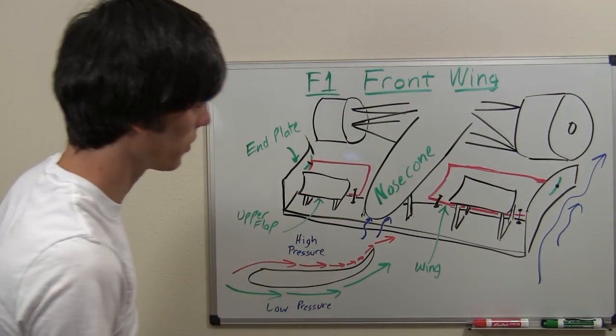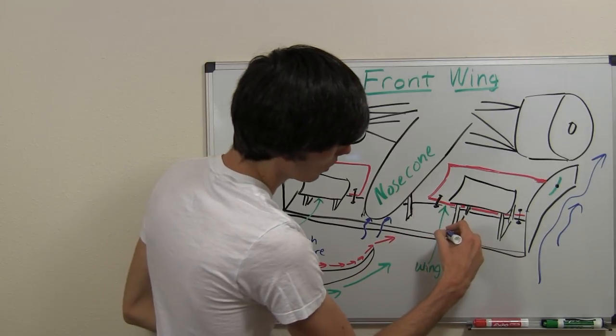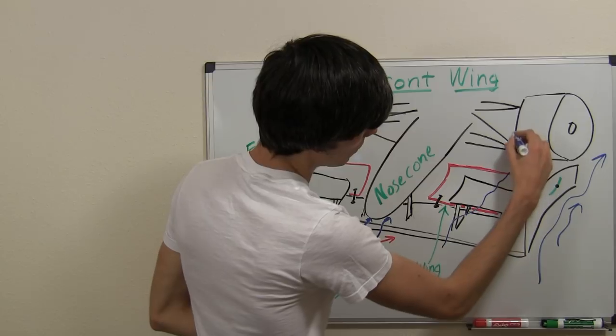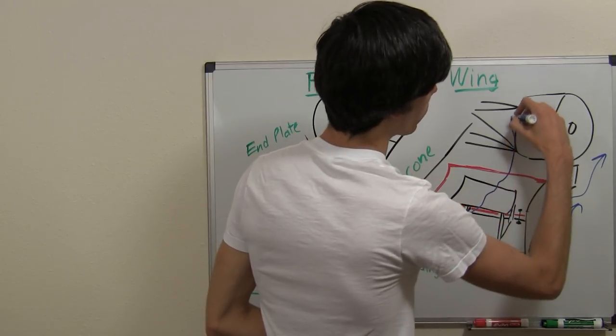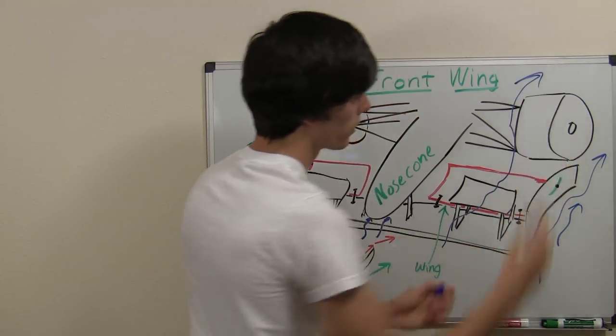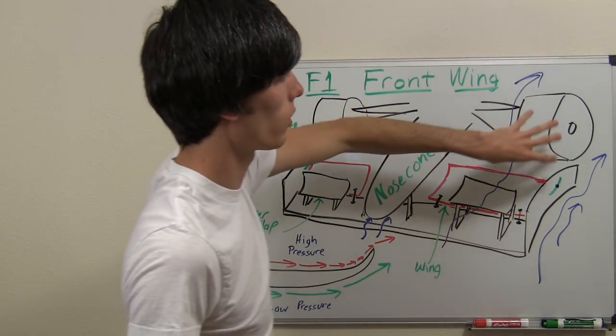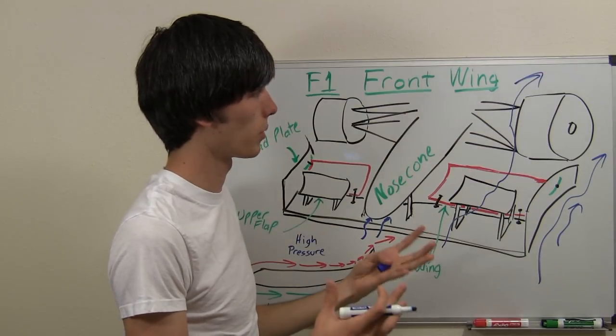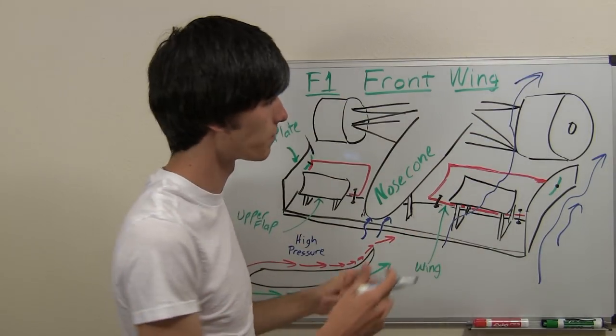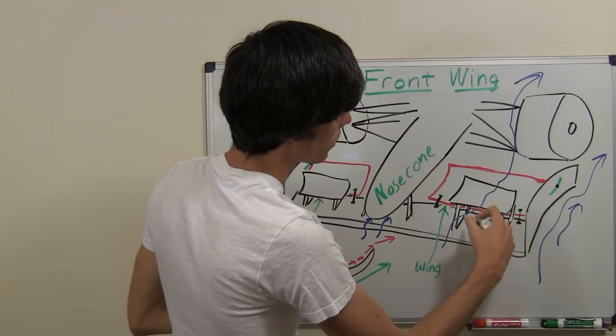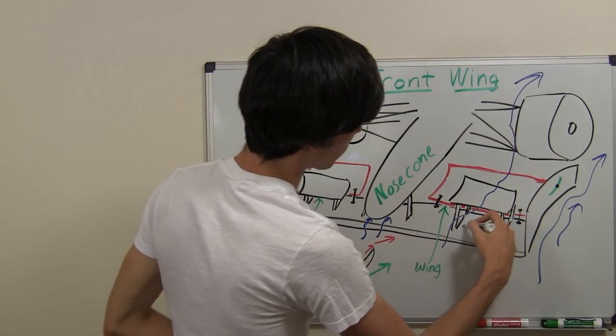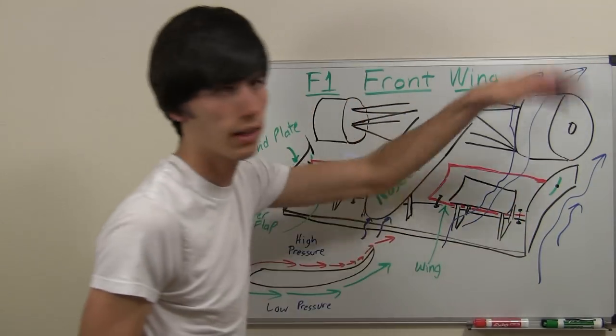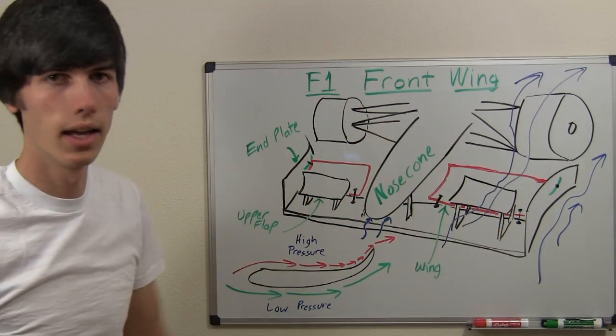Then we've got these upper flaps here. Air is going to pass over these and it's going to be forced up because of that angle, pushing the air over the tires. Once again, you don't want your clean air hitting your tires and then going back to the rest of your car because it'll become turbulent. You want it to be as clean as possible, and that's what these upper flaps do - pass that air right over the tires, keep it clean, and then it can go into the side pods and cool the vehicle.